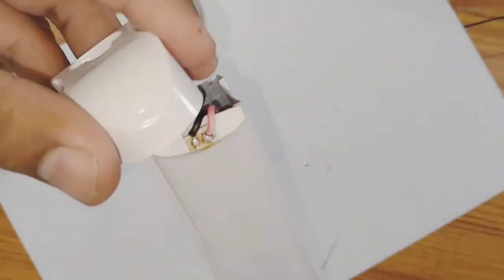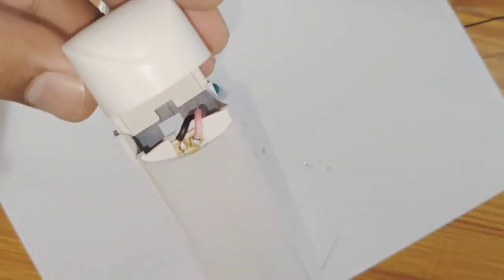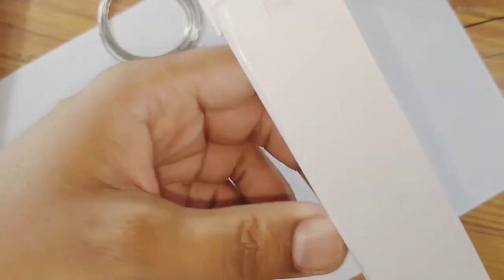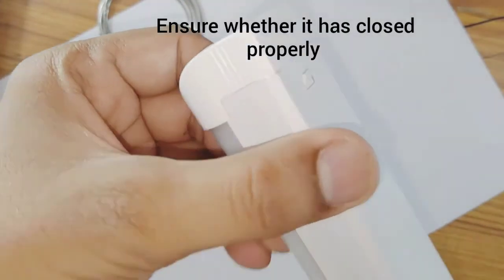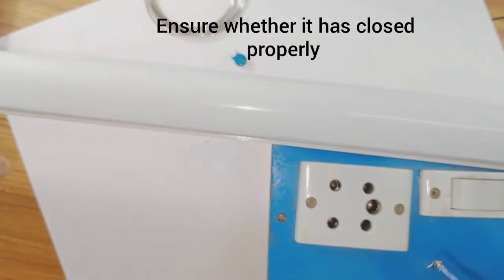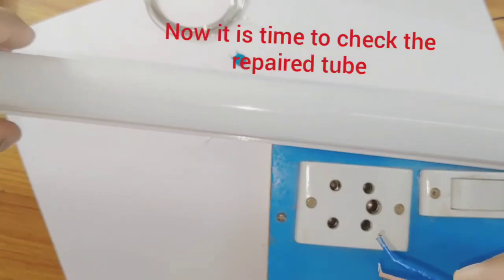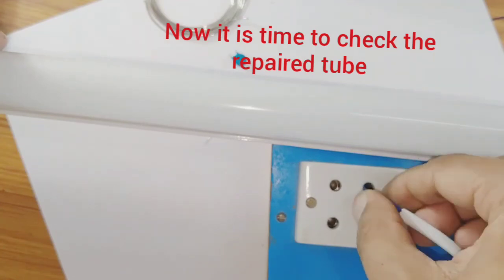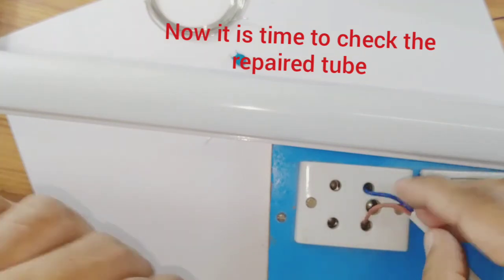Now I close this LED bulb from this end, that's all. Ensure that it has fitted properly. Now let me check this LED tube light whether it has got ready or not. I insert this to supply power.